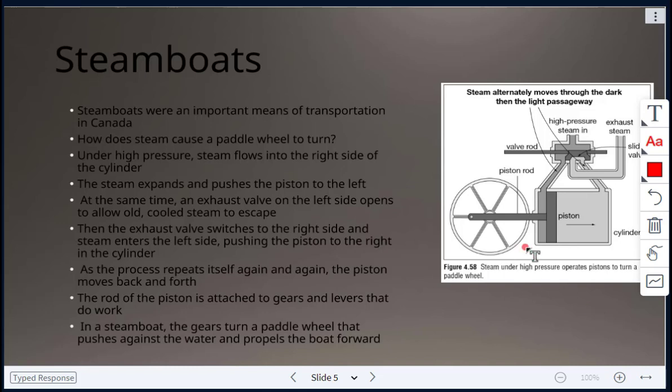And then that piston, the rod here, is attached to gears and levers, which will then do the work. In a steamboat, the gears will turn a paddle wheel that will push against the water and propel the boat forward.